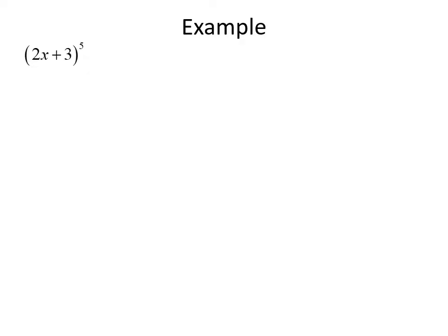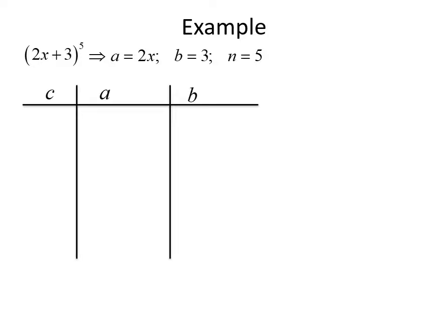Let's do another example: (2x + 3) raised to the fifth power. In this example, a is equal to 2x, b is equal to 3, and again n is equal to 5. We'll create our table with columns c, a, and b. Since n equals 5, we use the row from Pascal's triangle that has 5 as the second entry, so our c values will be 1, 5, 10, 10, 5, and 1.